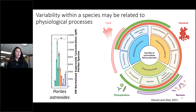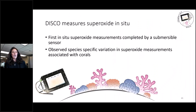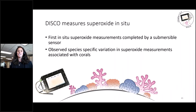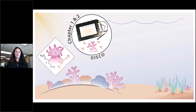The summary of the first two chapters: we developed the first in-situ submersible instrument to measure superoxide, and observed species-specific variation in superoxide measurements associated with coral. While this was helpful, it left us with a lot of questions — why and how are corals producing superoxide, and why do we see this species-specific variation?